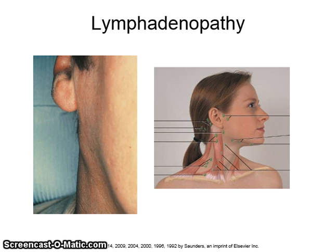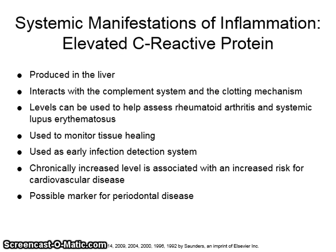These are not swollen glands — they are swollen lymph tissues. C-reactive protein is produced in the liver and interacts with the complement system and the clotting mechanism. The levels of C-reactive protein can be used to help assess rheumatoid arthritis and systemic lupus erythematosus, to monitor tissue healing, and as an early detection of infection. Chronically increased levels are associated with an increased risk for cardiovascular disease and could be used as a possible marker for periodontal disease.